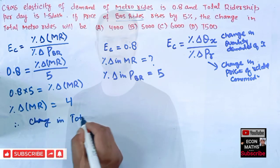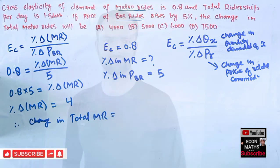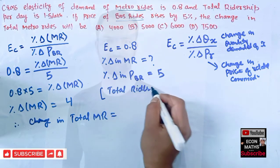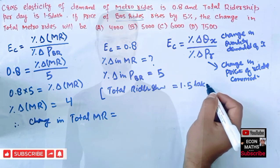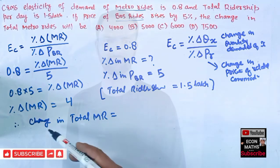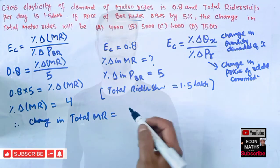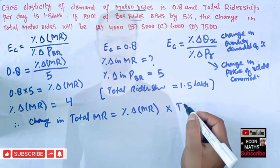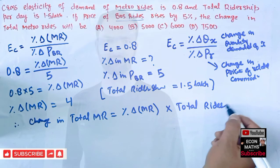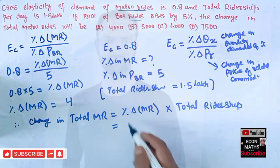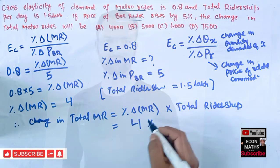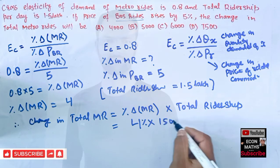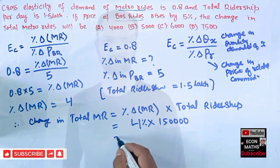The change in total metro riders equals the percentage change in metro riders multiplied by total ridership. Total ridership is given as 1.5 lakh. So change in total metro riders equals 4% into 1.5 lakh, which is 4/100 into 1,50,000.